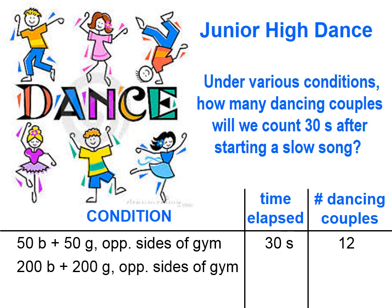Let's do the same thing, except instead of 50 of each, let's put 200 of each — again at the opposite ends of the gym. We cue the slow song, start the timer, and 30 seconds later we stop and count up dancing couples.